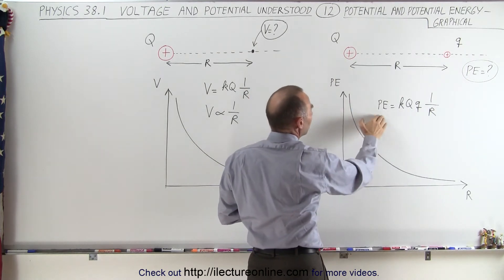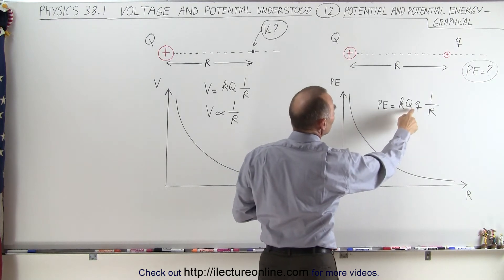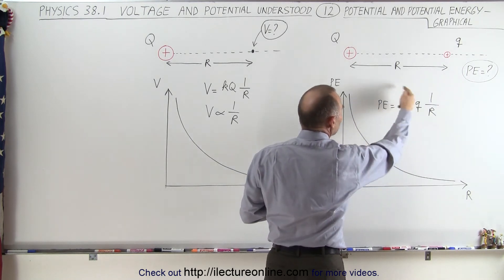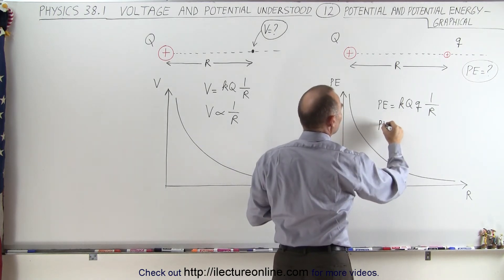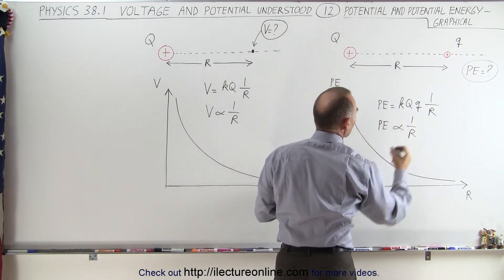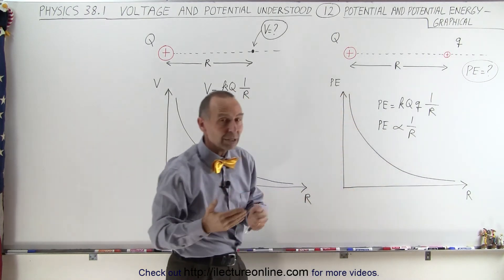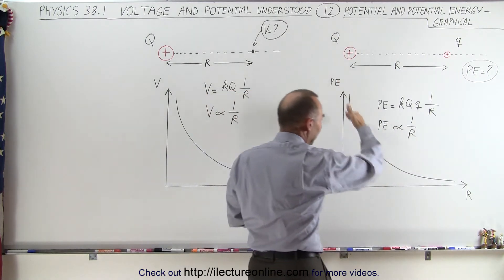The potential energy can then be written as K, big Q, small q divided by R. But if you write it like this, again, you can see that the potential energy is going to be proportional to 1 over the distance. And so again, we have that familiar 1 over X curve like this.